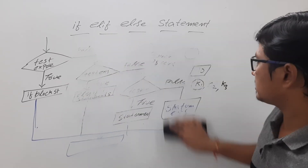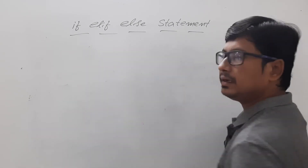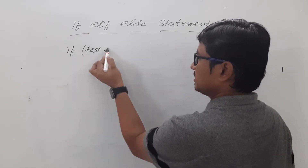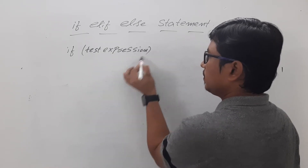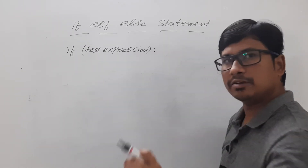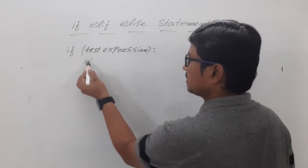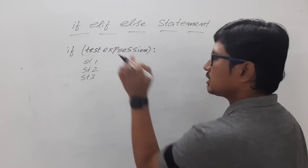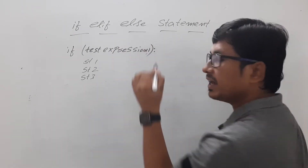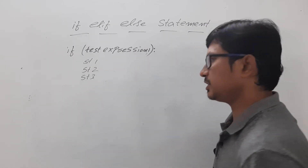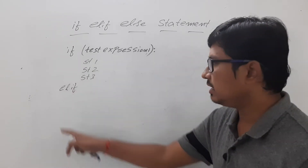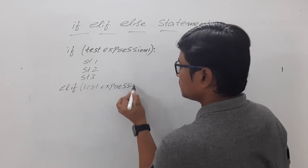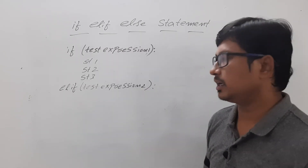Now let me discuss the syntax for using if-elif-else in Python. The syntax is very simple. You use the keyword 'if' followed by the test expression, then a colon. The statements you want inside the if-block — statement one, statement two, statement three — must follow proper indentation. If this test expression one is false and you want to check test expression two, you use 'elif' followed by test expression two and a colon.